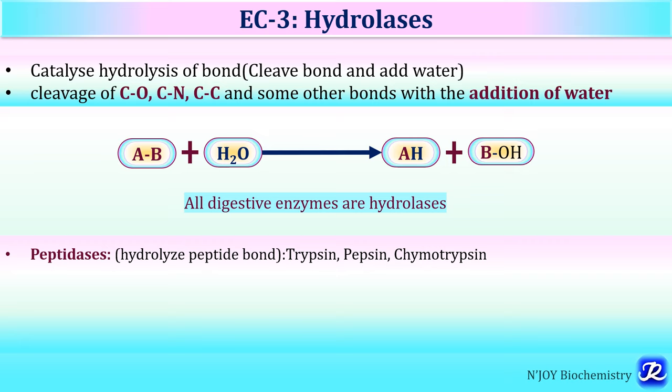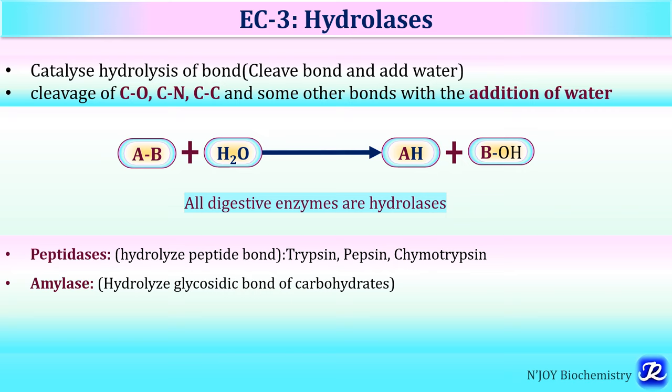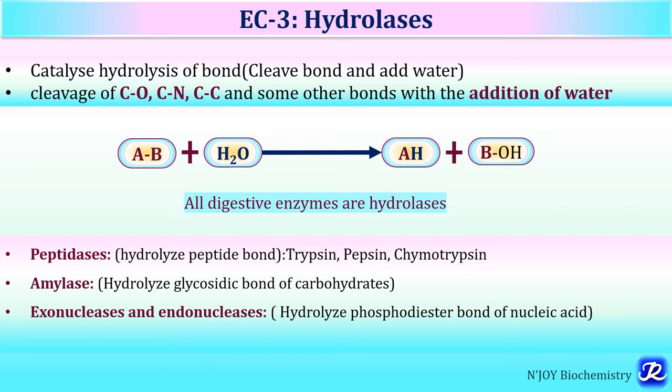For example, peptidases hydrolyze peptide bonds — such as trypsin, pepsin, and chymotrypsin. Amylase hydrolyzes the glycosidic bonds of carbohydrates. Exonucleases and endonucleases hydrolyze the phosphodiester bonds of nucleic acids. Esterases and lipases hydrolyze ester bonds of lipids.